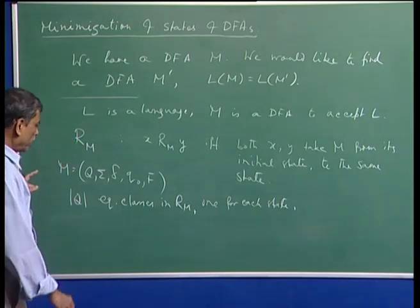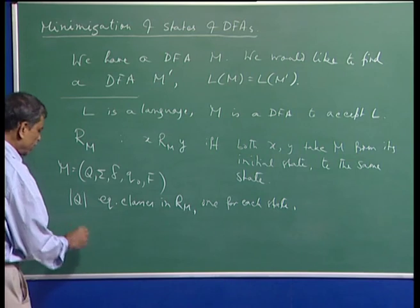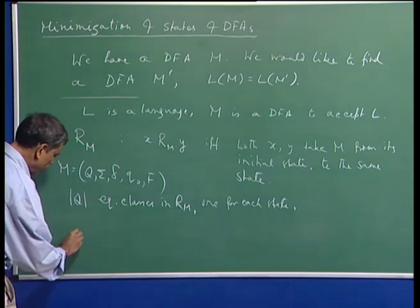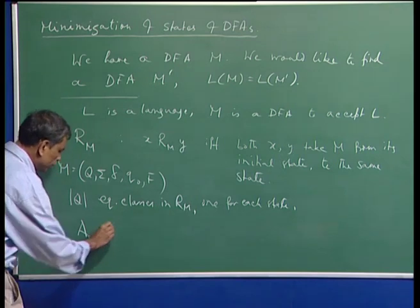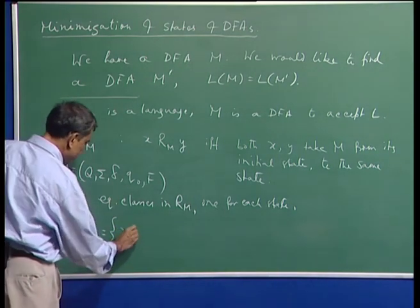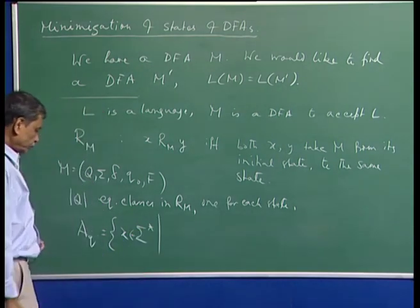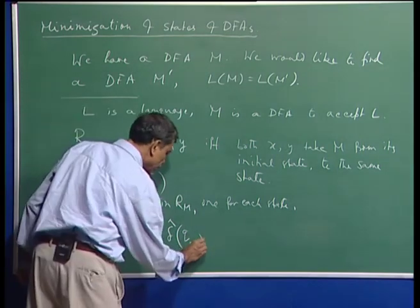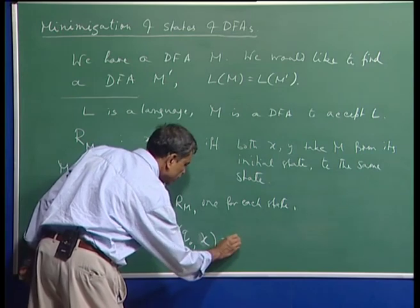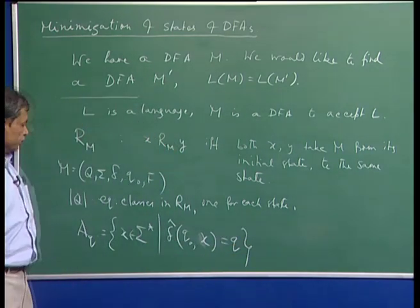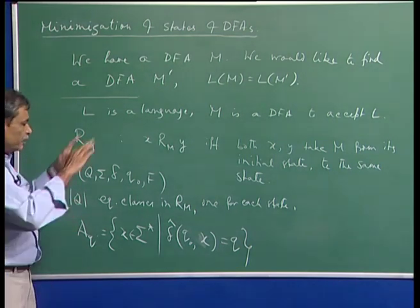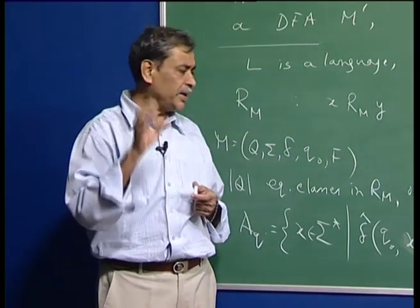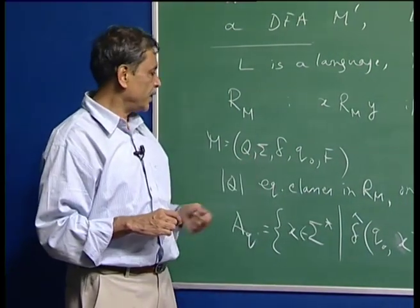Suppose M is (Q, Σ, δ, q0, F). Then R_M will have exactly as many equivalence classes as there are states—one for each state. Corresponding to state q, the equivalence class A_q is the set of all strings x in Σ* such that δ̂(q0, x) = q. So Σ* is partitioned into equivalence classes, each corresponding to one of the states of the machine.